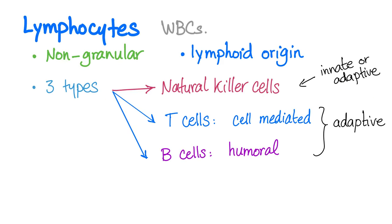Lymphocytes are members of the white blood cells — non-granular of lymphoid origin. There are three types. The natural killer cells — they are the non-specific street fighters, used in innate as well as adaptive immunity. Then there is the T-cell: very specific, cell-mediated adaptive immunity. And we have the B-cells or B-lymphocytes — humoral immunity. Humoral means body fluids.